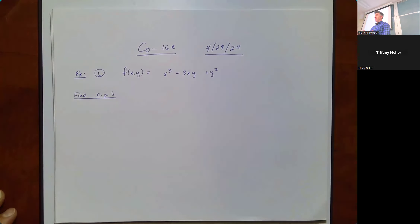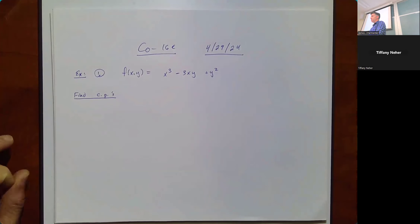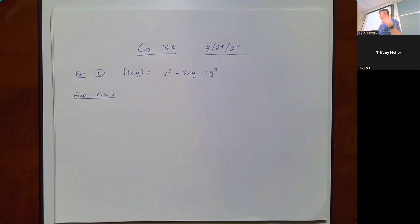Your professor might have said we're taking the gradient and setting it equal to zero. The gradient, if we do talk about it, is just a vector where each component is each partial derivative.